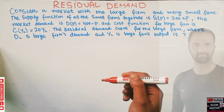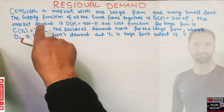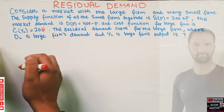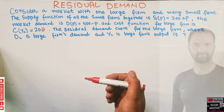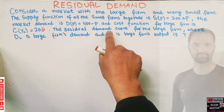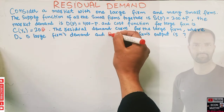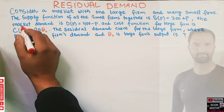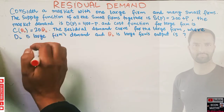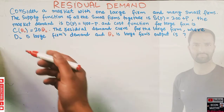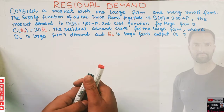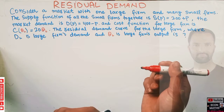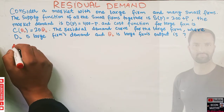To make it clearer, I will use Q instead of Y for simplicity — so QL denotes the output of the large firm. It's the same whether you write Y_L or Q_L; it denotes the output. Now, we have to find the residual demand.